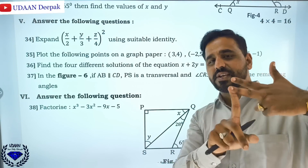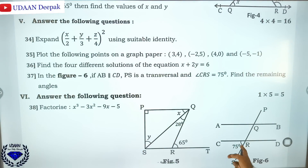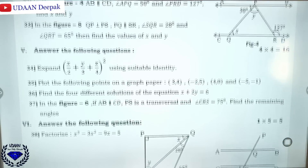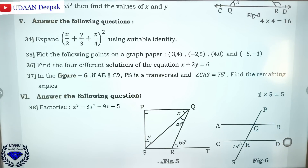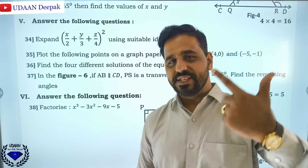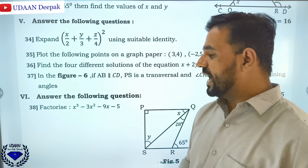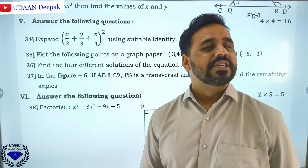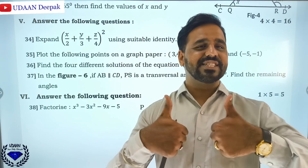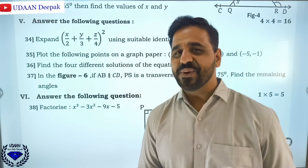In the last figure, if AB is parallel to CD and PS is a transversal, and angle CR is 75 degrees, find the remaining angles using properties of parallel lines — vertically opposite angles, adjacent angles, and alternate angles. Then factorize x² − 9x − 5. I will be solving these in subsequent sessions. If you are finding it helpful, kindly like, share and subscribe, and put any questions in the comment box below. Thank you and take care.